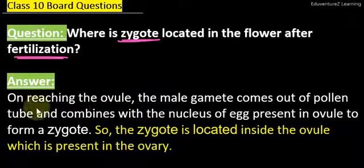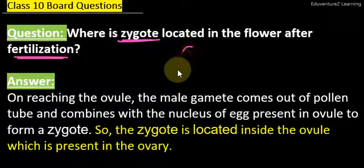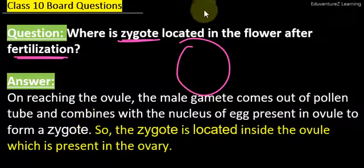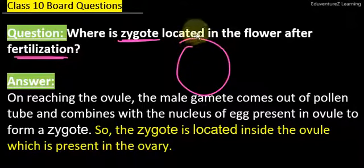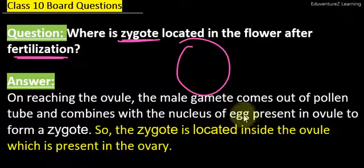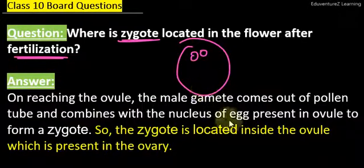So the answer is: on reaching the ovule. We know that in plants there is an ovum. The male gamete comes out of the pollen tube — the male gamete is in the pollen tube — it gets from the chalaza and goes into the ovule and combines with the nucleus of the egg. Here there are two nuclei, and in the ovule they combine to form the zygote.